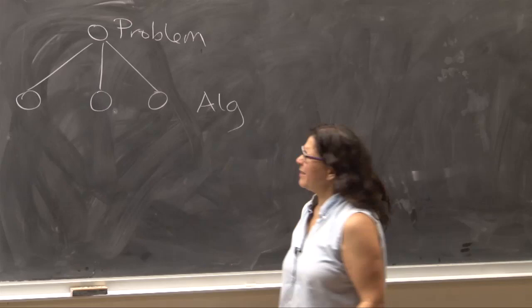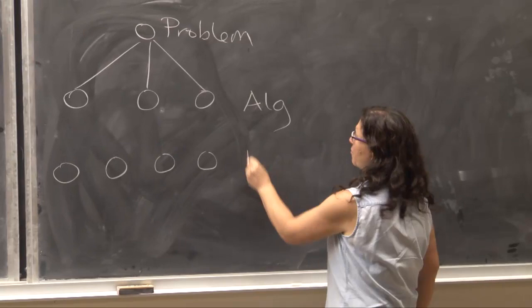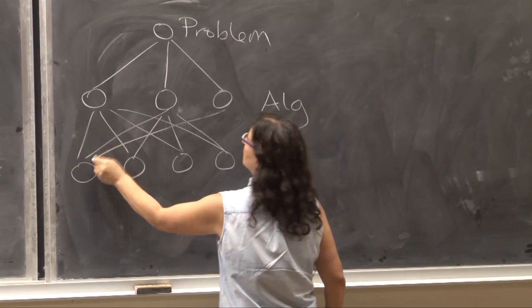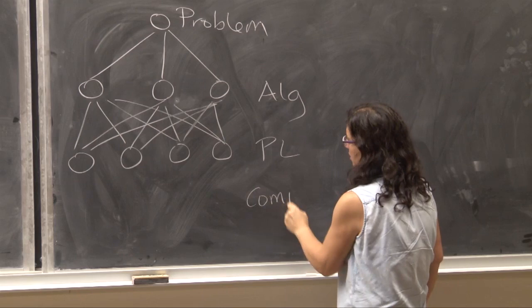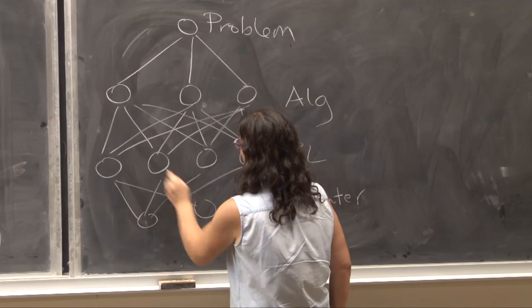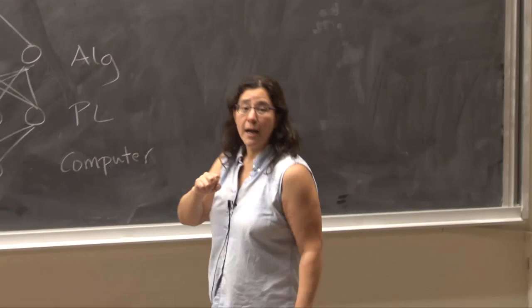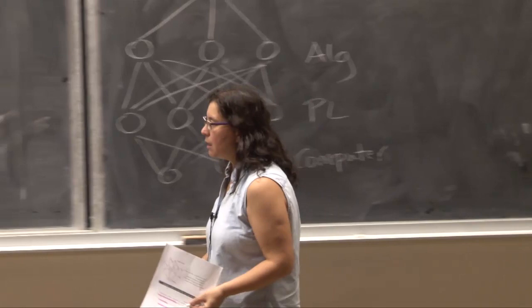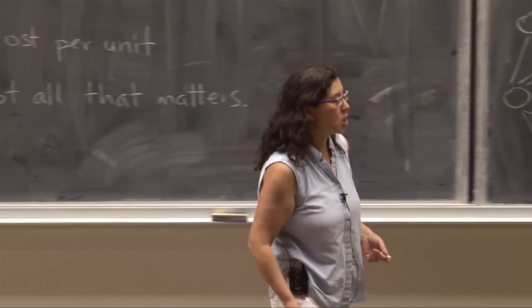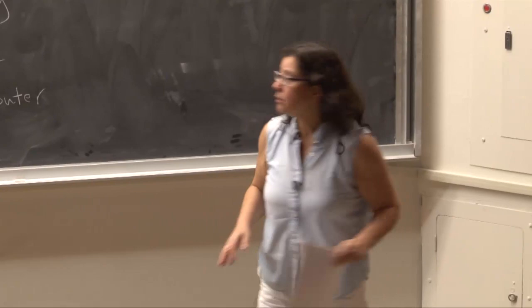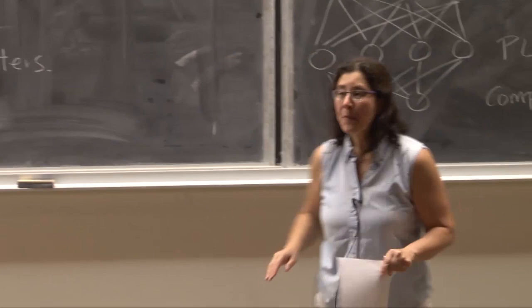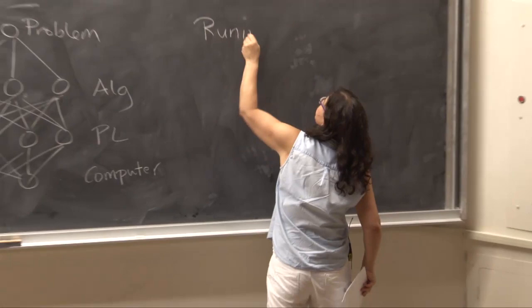And we have some number of algorithms that we're going to choose among. We're going to assume they're all correct. They all solve the problem. And now we also have to think about the fact that these could be written in any number of programming languages. Let's assume they all can be written in all. And of course, these programming languages are going to be run on some kind of computer. So it looks like there's a lot to think about when we're thinking about what the best algorithm might be. It could be a lot of different factors. It could be how much you have to pay a programmer to be willing to write that up as code. It could be the amount of memory being used. It could be the running time. We're going to make things simpler. We're not going to do more work than needed. We're going to make things simpler and simpler as we go through. And we're going to make things simpler in this instance by just looking at running time.